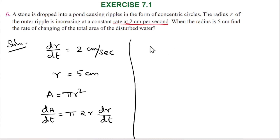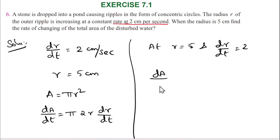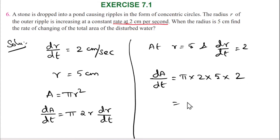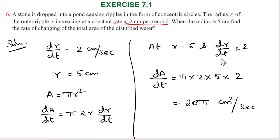When r = 5 and dr/dt = 2, we get dA/dt = π × 2 × 5 × 2 = 20π cm² per second. So dA/dt is equal to 20π cm² per second. This is our required answer. Thank you, students.